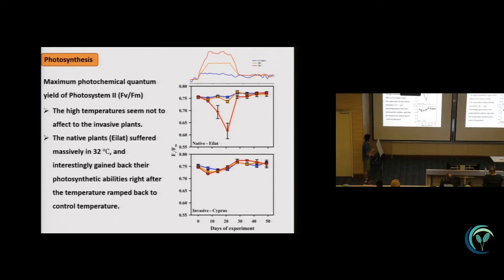Here is the photosynthesis activity, the maximum photochemical quantum yield of photosystem II, Fv by Fm. We can see in invasive plants, at all temperatures, we don't see any difference among the temperatures.